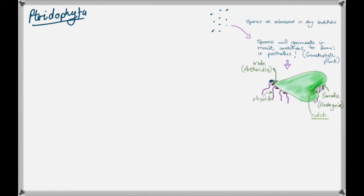We can see that we have a male structure to the one side of the prothalus of the gametophyte plant, and on the other side we've got the female structures. Obviously if we've got male and female structures, we're going to have male and female gametes that are produced as well.